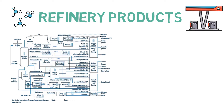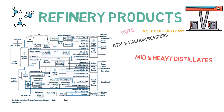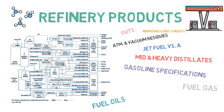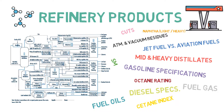Then we continue with refinery products. We start with cuts such as naphtha, jet fuels, mid and heavy distillates, atmospheric and vacuum residues, asphaltenes, fuel gases, fuel oils, and so on. We also get to know important product specifications — for instance, octane rating in gasoline and cetane index for diesel.